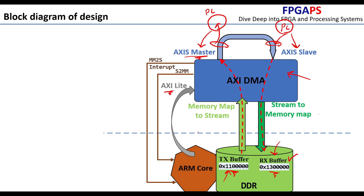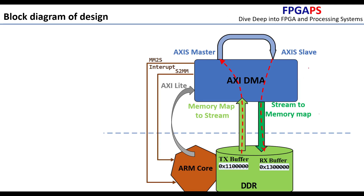All of this configuration is done from the ARM core before the data movement begins. The ARM core can also read the status of the AXI DMA to detect whether it is still busy with data movement or has finished. We can see that the AXI DMA has five important ports. The Memory Map to Stream port reads data from DDR and writes it to the AXI Stream Master.